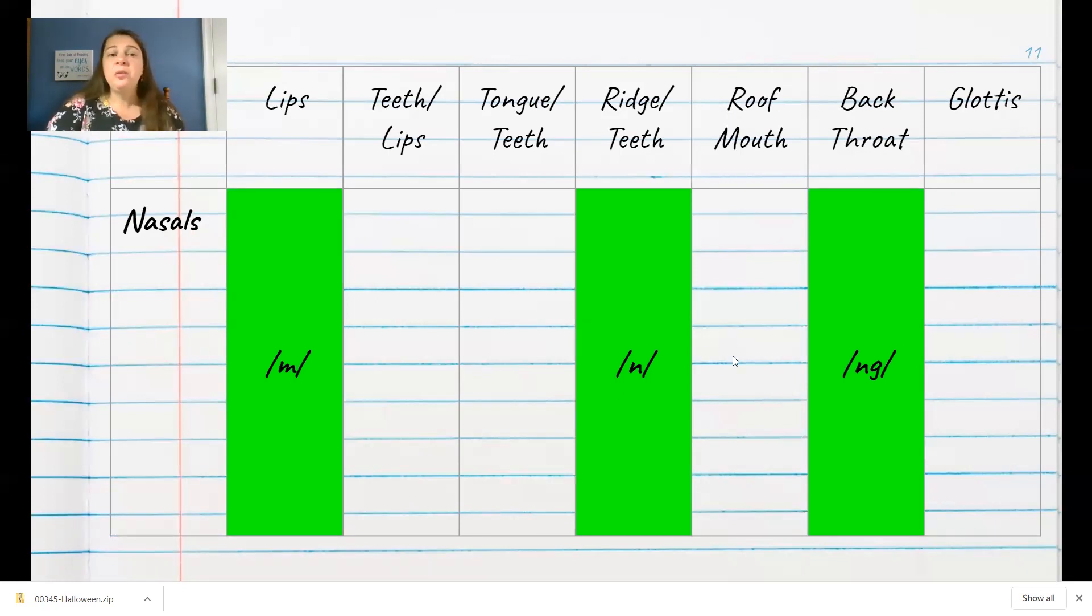One thing I want to point out with the nasals is they don't play well with vowels. When we have a word like 'an,' when you see an 'a,' you would expect a certain sound.